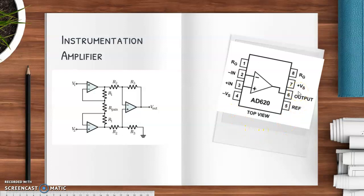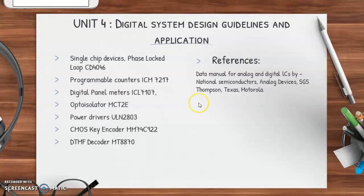All such optimized, newly developed ICs are in Unit 3, which deals with analog circuits. Unit 4 deals with digital systems and includes single-chip ICs for phase-locked loops, programmable counters, digital panel meters, isolators, and power drivers used to drive stepper motors or DC motors — all optimal methods of implementing digital circuits.